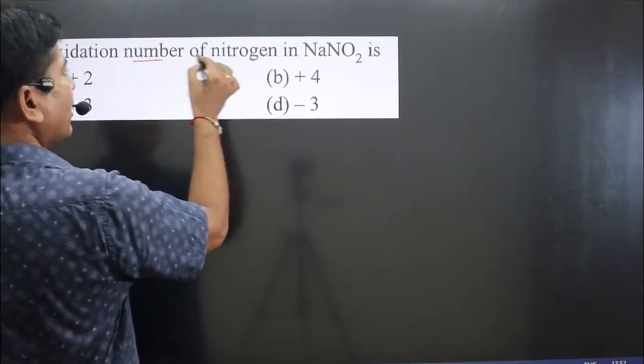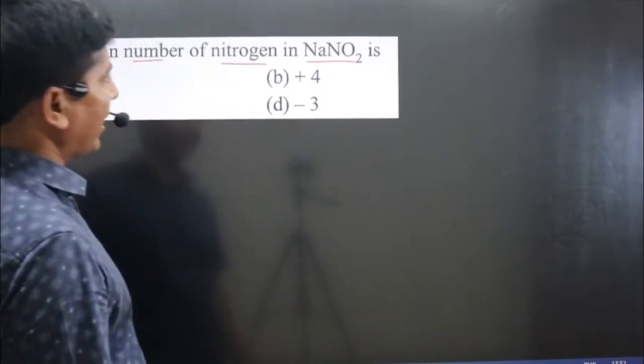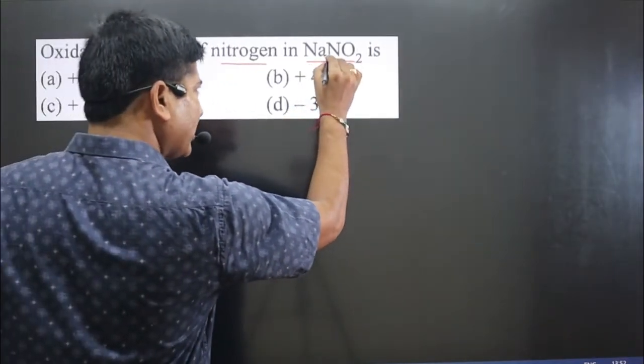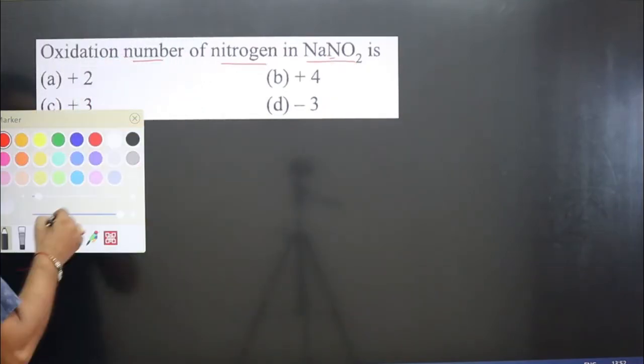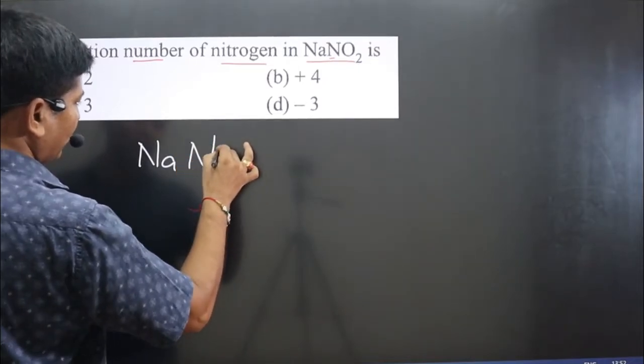Question says oxidation number of nitrogen in NaNO2 is - in NaNO2 we have to calculate the oxidation number of nitrogen. Nitrogen is the central element. The compound we have is NaNO2, which is a neutral compound.